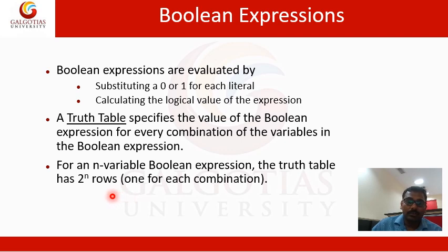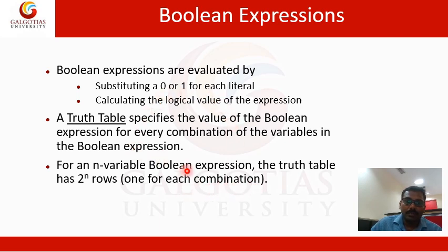For n number of variables, the truth table has 2 to the power n rows, because each row has a unique combination of n variables. This is the expression, and the corresponding truth table can be drawn using 2 to the power n rows for n number of variables.